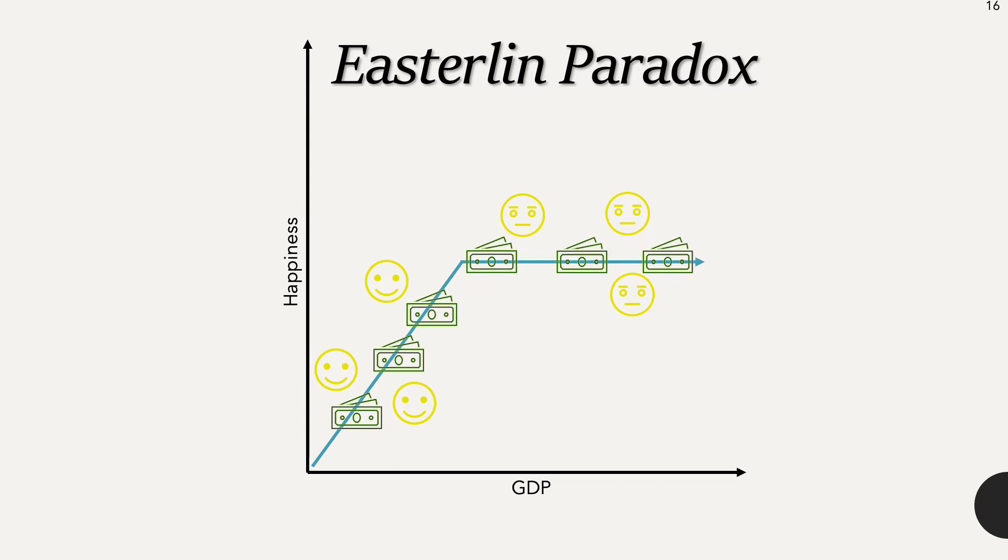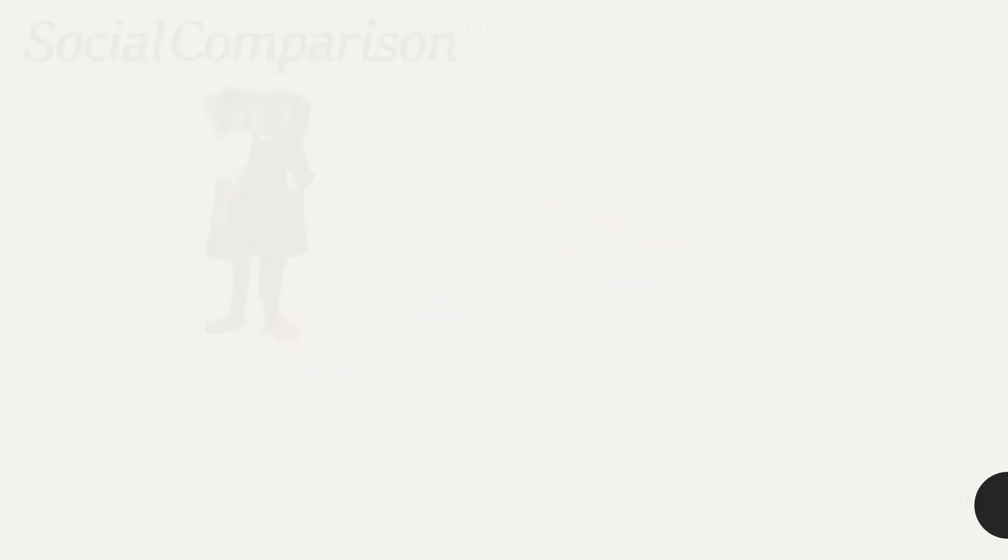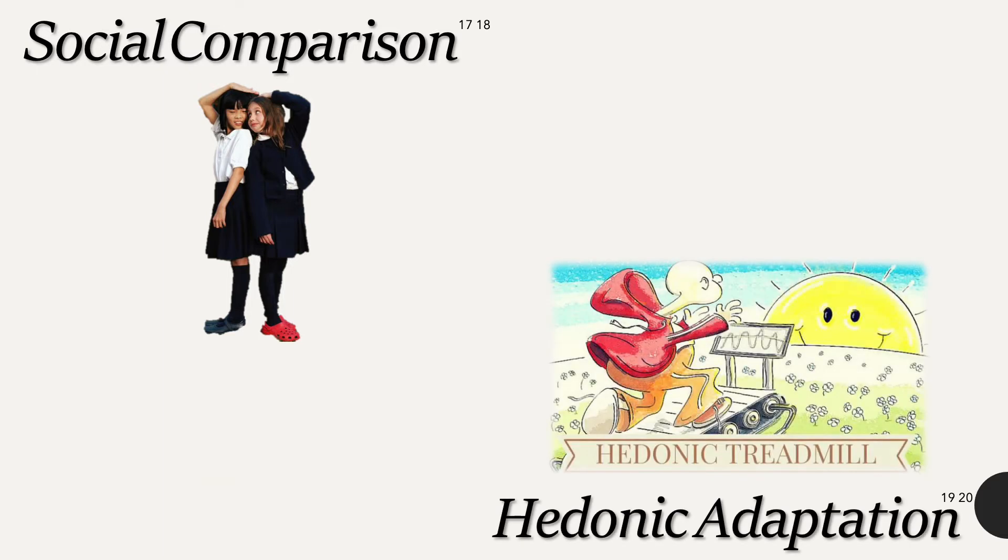Once basic needs are met, even if GDP per capita and personal income grow, two processes begin to appear. Social comparison - we compare what we have to others. And hedonic adaptation, also known as the hedonic treadmill - we get used to what we have.